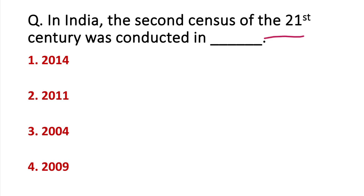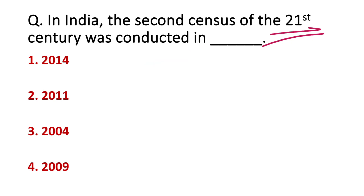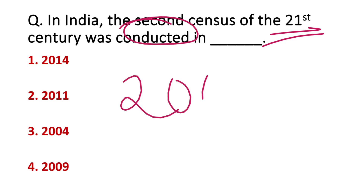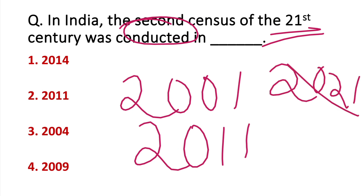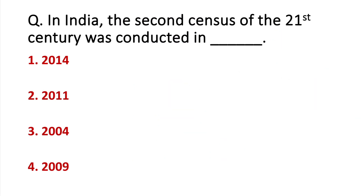In India, the second census of the 21st century was conducted in which year? This is a tricky question. The first 21st century census was in 2001, the second was in 2011, and the third was due in 2021 but did not happen — it will most likely occur by 2026. The correct answer is 2011.